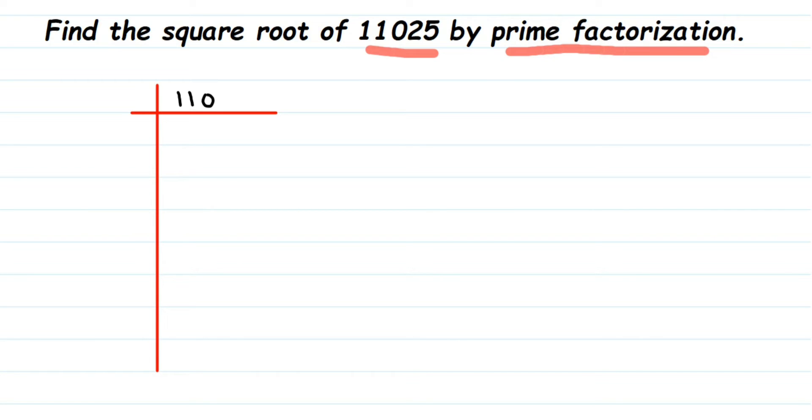So this number 11,025 is an odd number, so we cannot divide this with two. I'm going to start with three. So let's try to divide this with three. We have 11, three threes are nine, then two will be left.